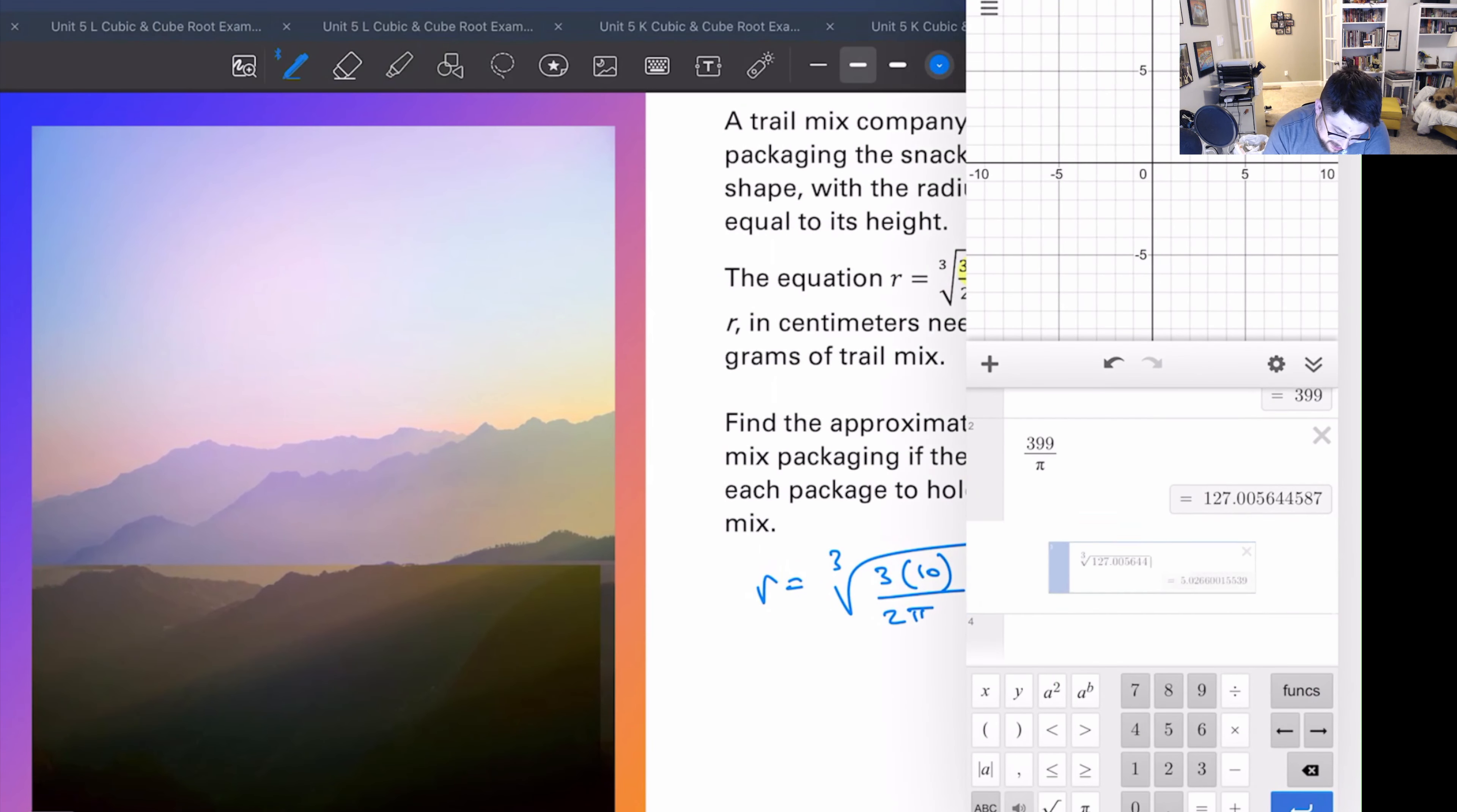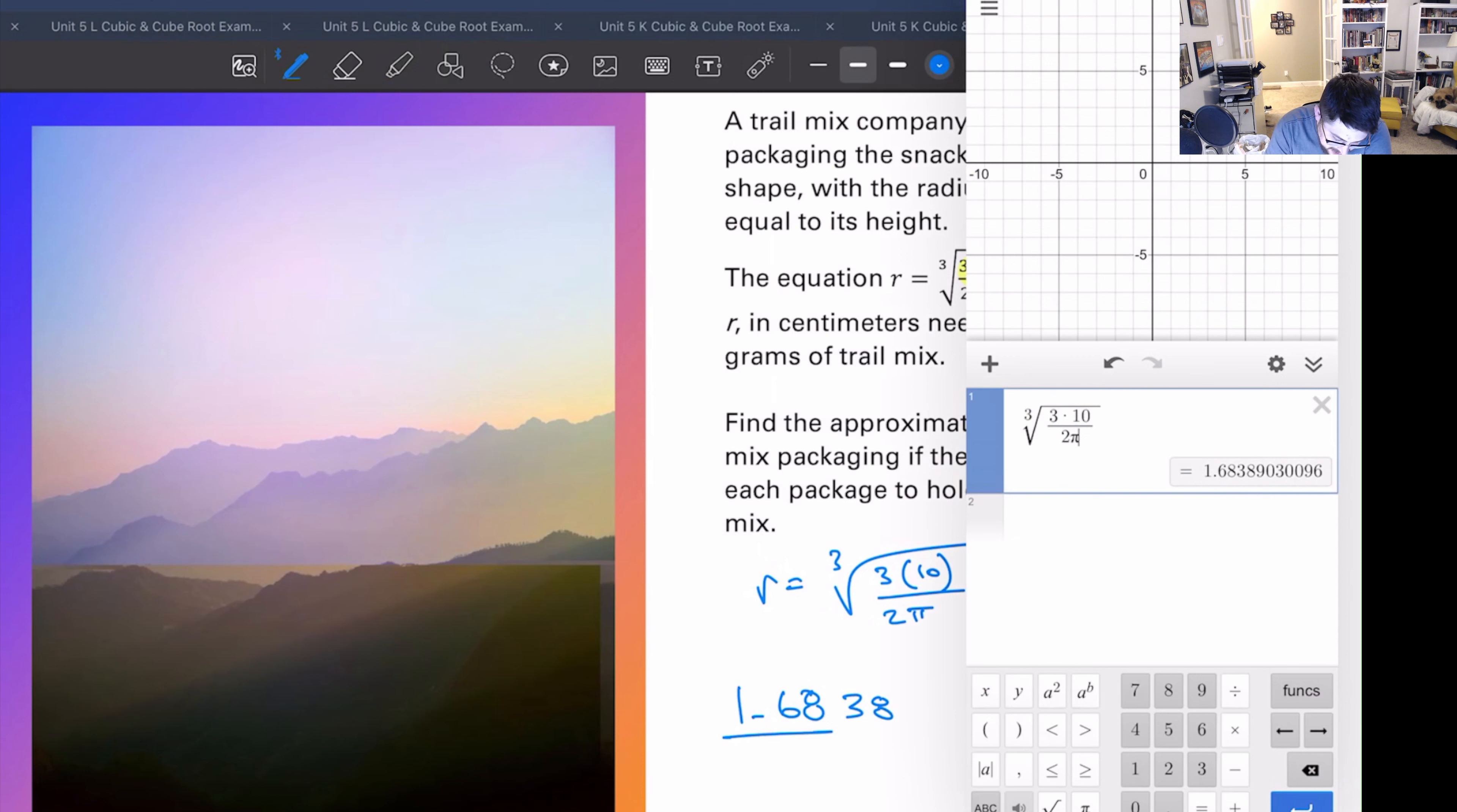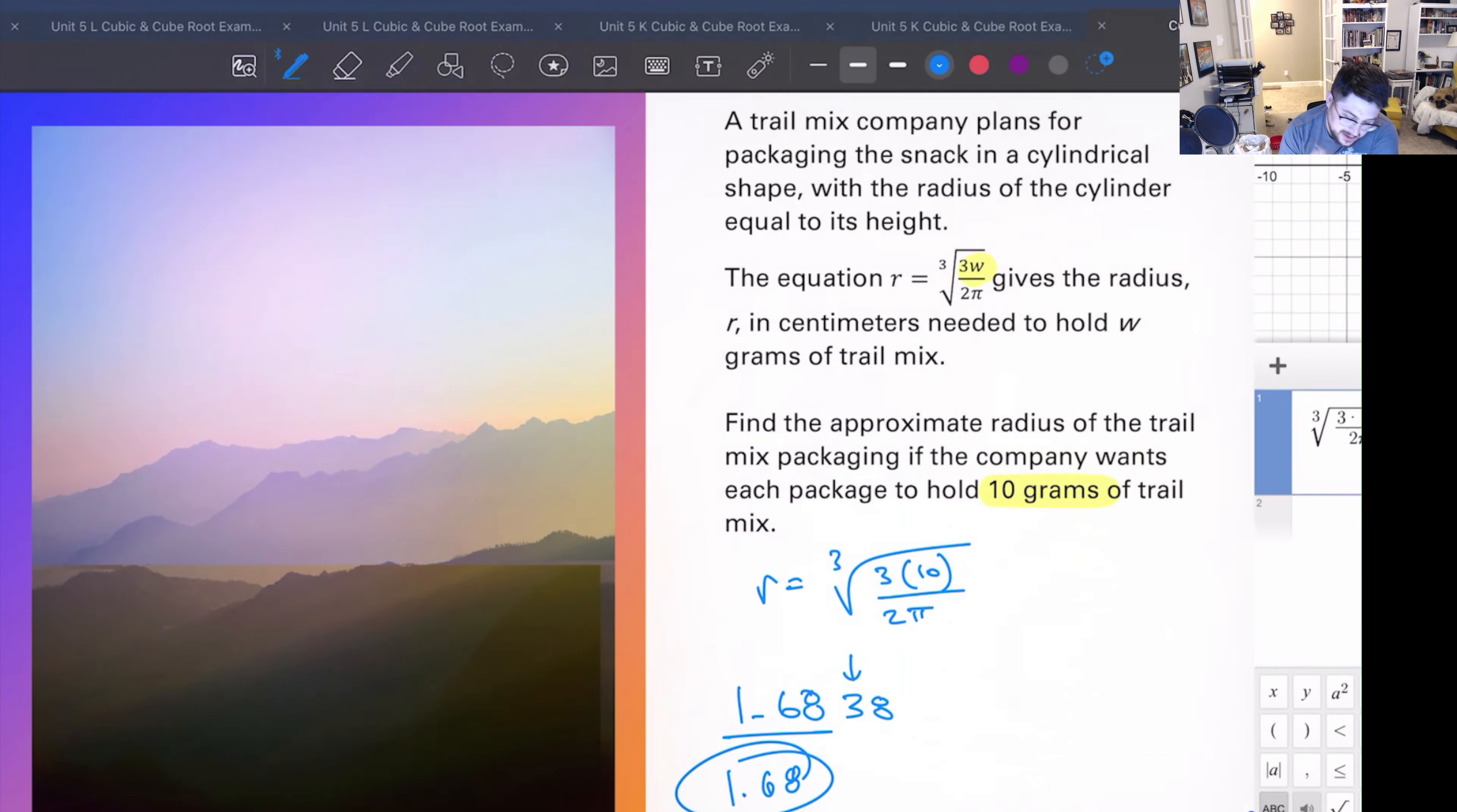So let's get that Desmos right back up, clear this stuff out. I'm going to put all of this in. Let's start by making our cube root and we'll put, tell it a fraction to make our lives easier, 3 times 10 on top, 2 pi on bottom. We get 1.6838 blah blah blah blah blah, and we want two decimal places. This 3 means we keep what we have, we round down, 1.68.